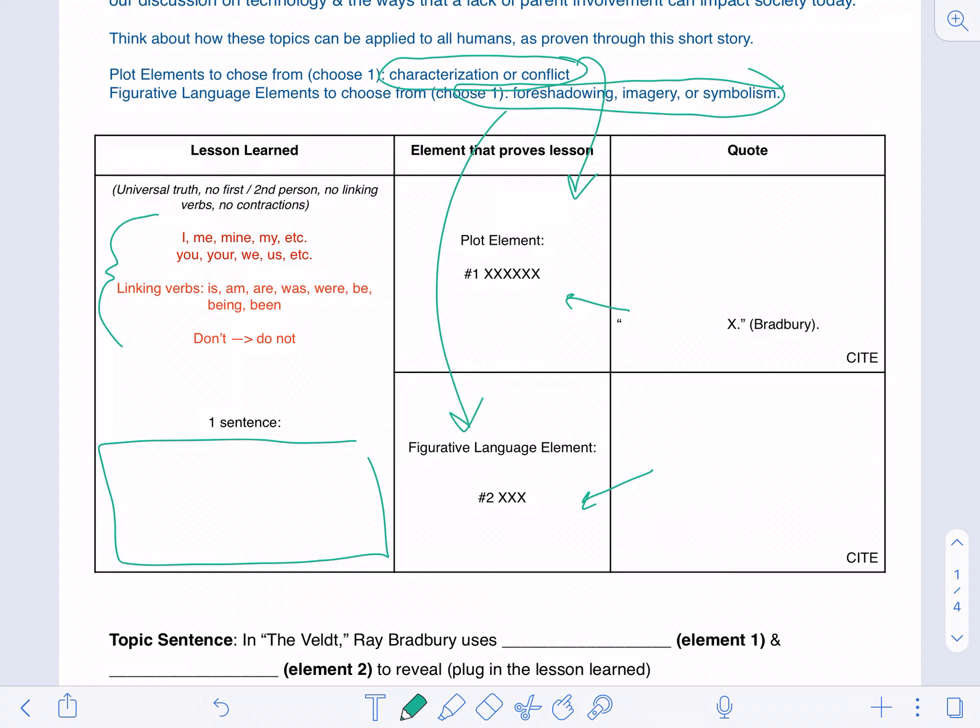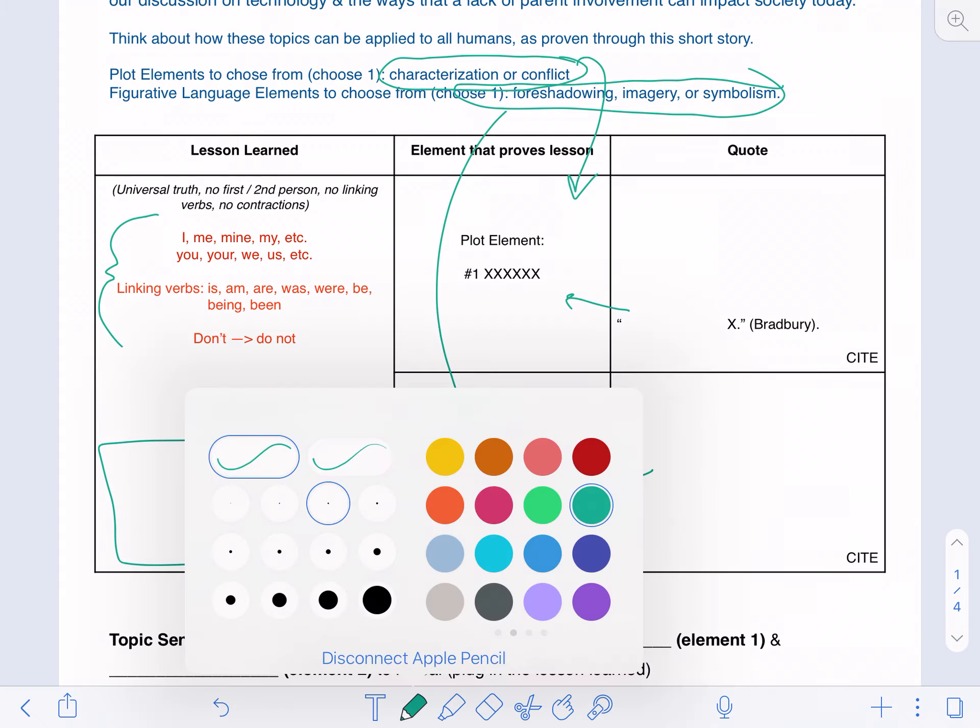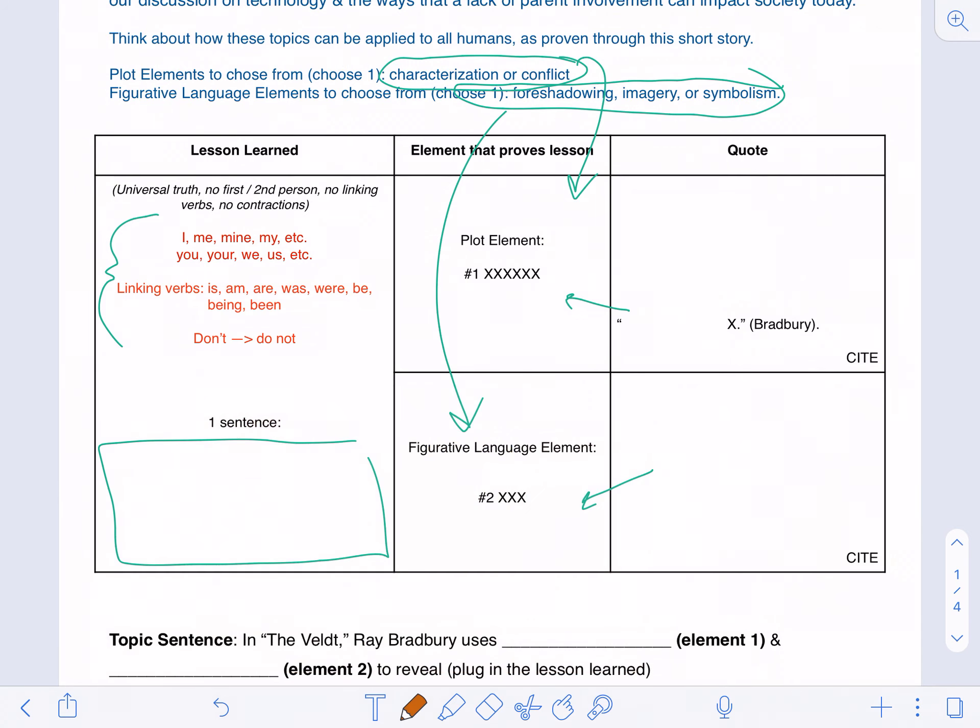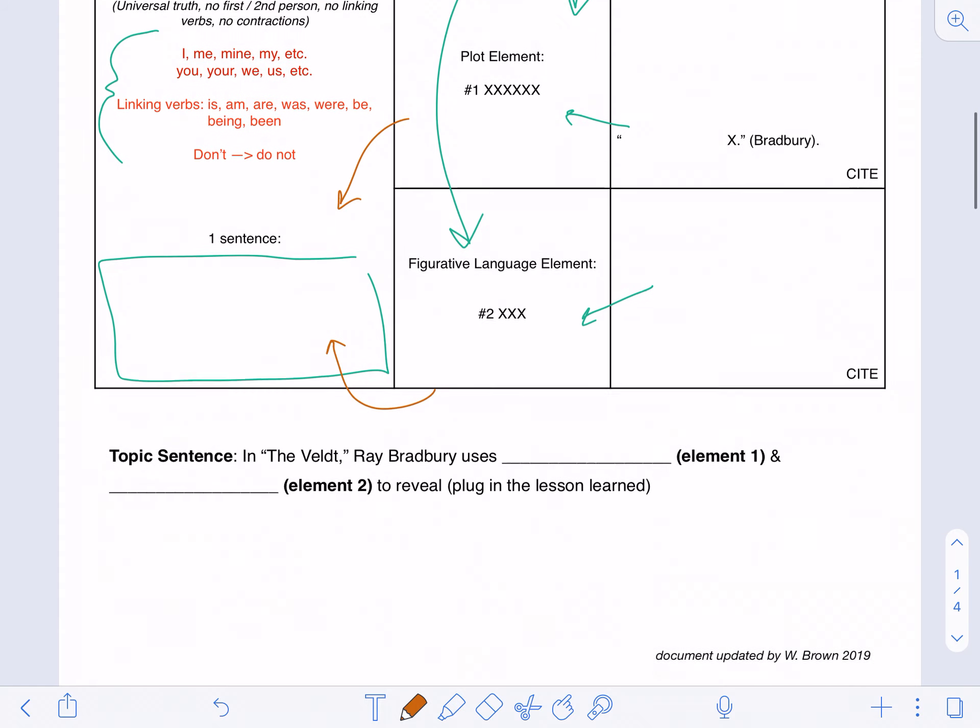It's one of these for this box and one of these for this box. So you're not allowed to do two plot elements, you're not allowed to do two figurative language elements. You need to do one of both, and then once you figure out which quote and elements you'd like to do, you have to make sure that those quotes then in turn prove your lesson learned.